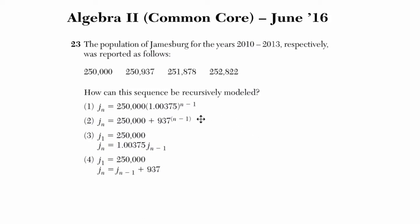Take a moment, read the problem, and try it out. Press play when you're ready to solve it with me. Okay, so we're told that the population of Jamesburg for the years 2010 to 2013 was reported as follows. Here are those populations. They want to know how can this sequence be recursively modeled.